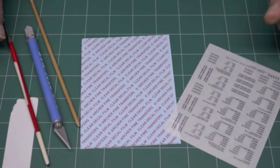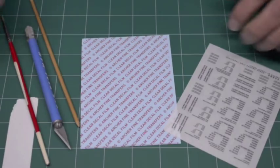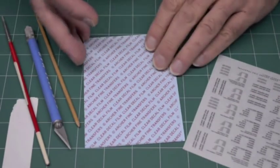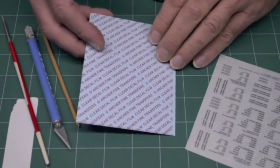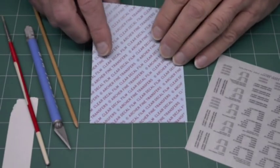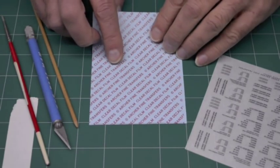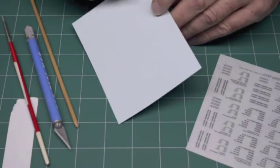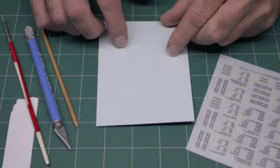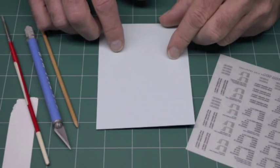To make a water slide decal from a dry transfer is very easy. You have to use clear decal film. Now, this is not wet media paper. This is clear decal film. It has a water absorbent paper backing and clear film on one side.